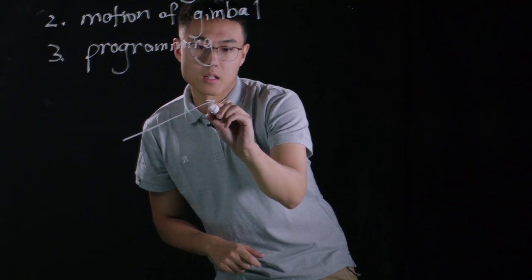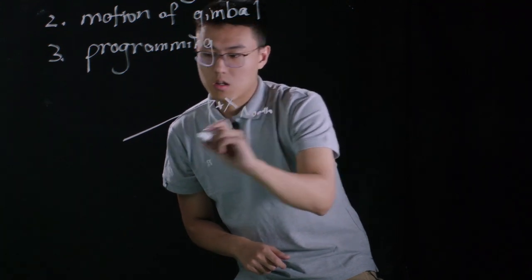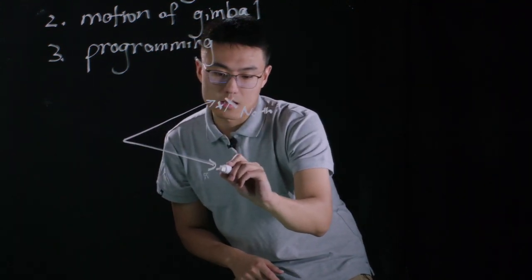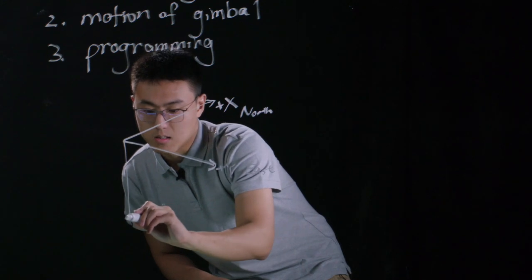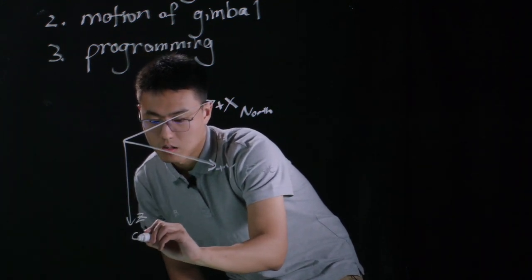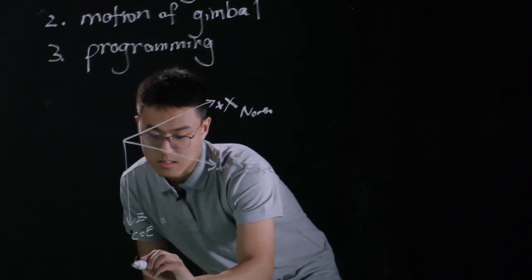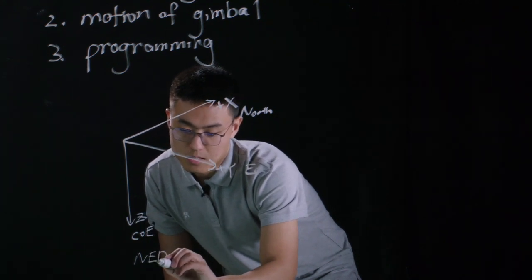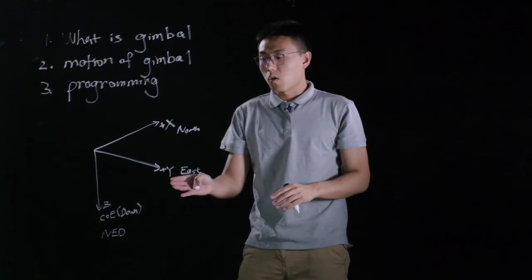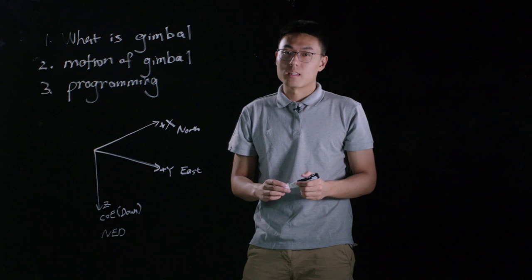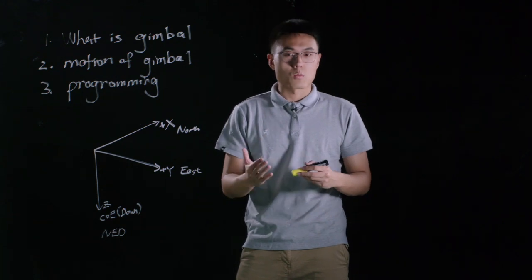In this coordinate system, the x-axis points to north, the y-axis points to east, and the positive z-axis points to the center of the earth. This coordinate system is also called the NED system, which represents north, east, and down. This coordinate system is fixed and will not move with the gimbal of S1. Beside this NED coordinate system, we also need to set up a chassis coordinate system, which moves with the chassis.